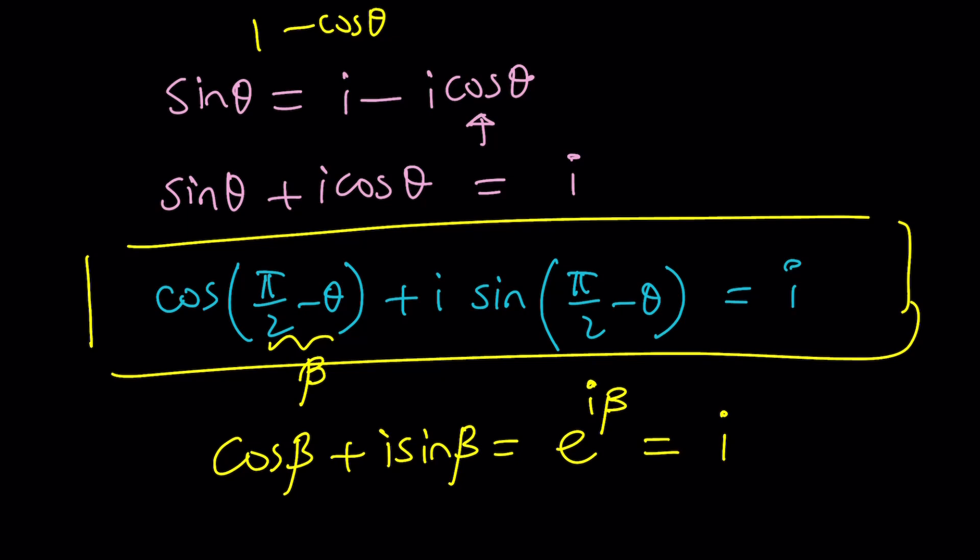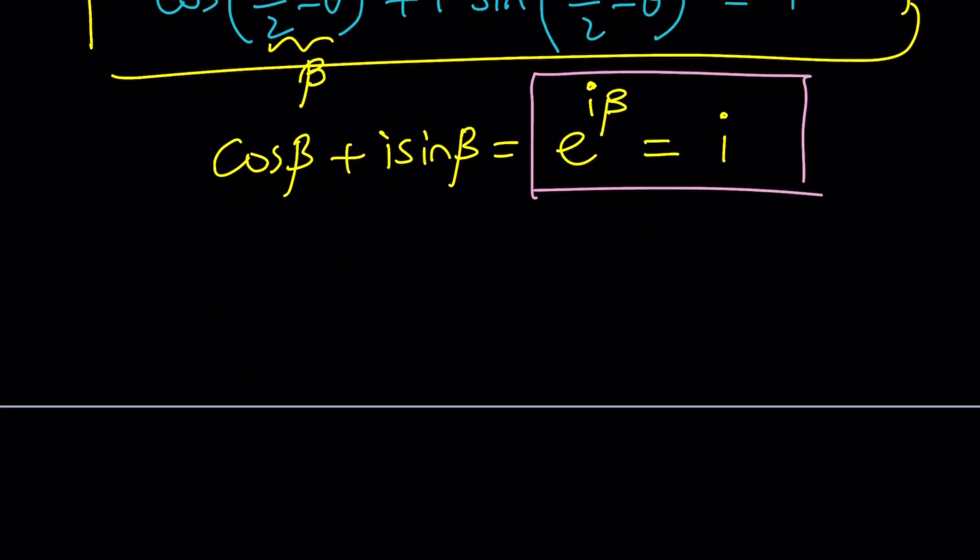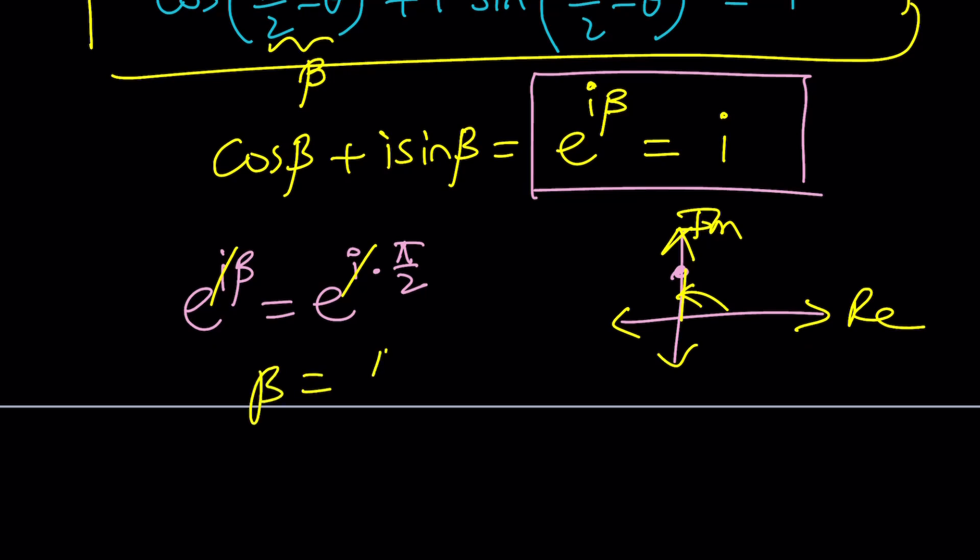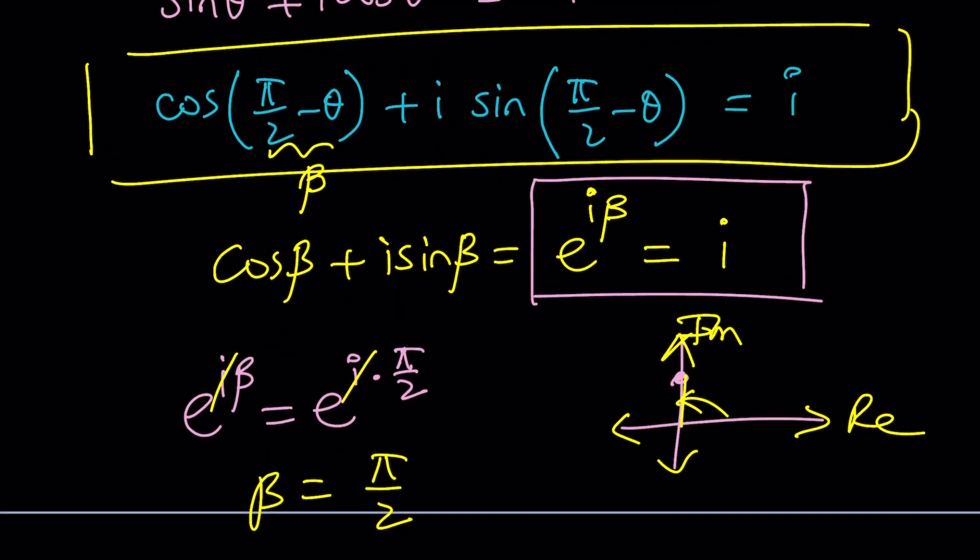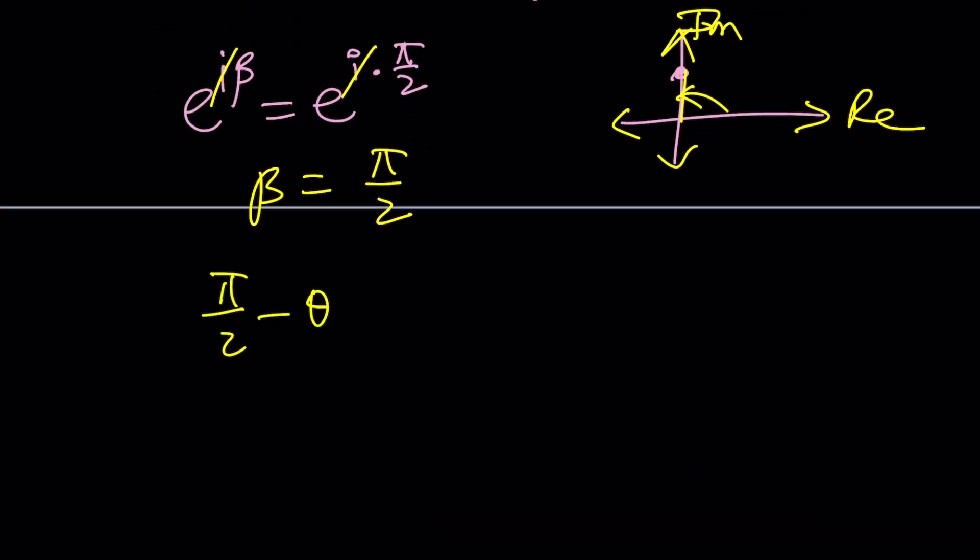e^(iβ) equals i. What does that mean? Can I write i using e to the power something? Absolutely. If you think about the Argand plane, you're going to realize that I can be written as e^(i·π/2) because this is where i is. It just happens to make π/2 radians or plus 2π and whatever. Real and imaginary. So from here, we get cancel the i's and we get β = π/2. What does that mean? What is beta? Beta is π/2 - θ. So π/2 - θ = π/2. Uh-oh. We got θ = 0.